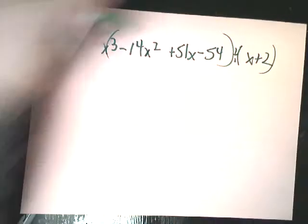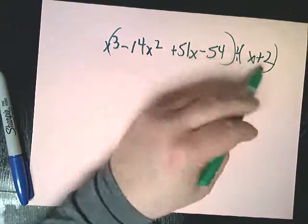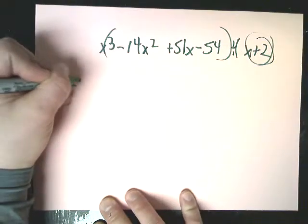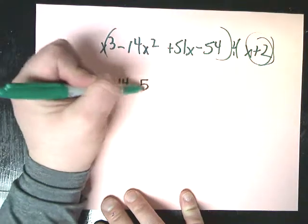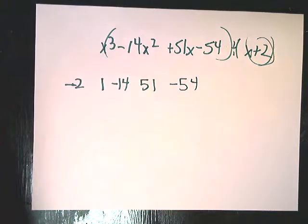So x to the third minus 14x squared plus 51x minus 54 divided by x plus 2. I'm going to change the sign there to make it negative 2. Then you deal with 1, negative 14, 51, and negative 54. This is kind of a beast.